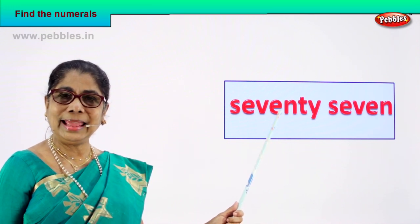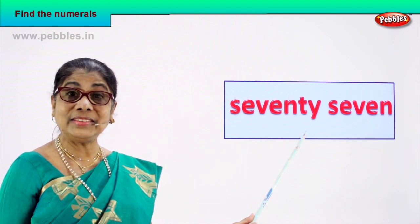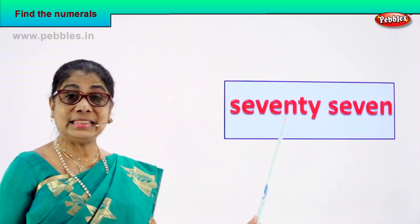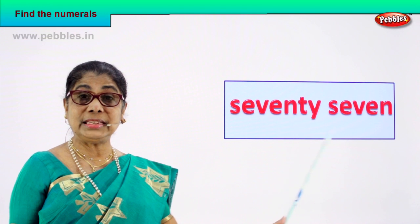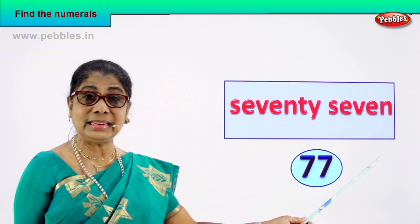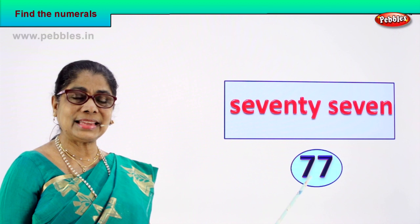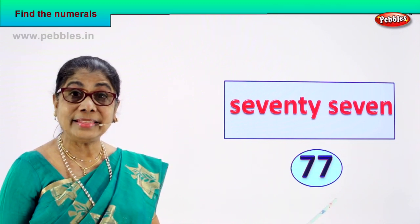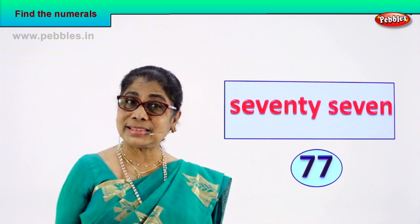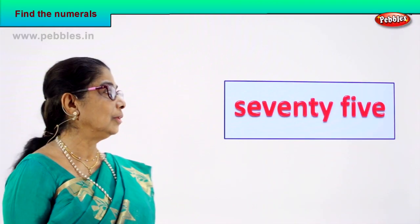S-E-V-E-N-T-Y, 70. S-E-V-E-N, 7. Seventy-seven, 77. How do we write the numeral? Seven and seven — 77. That's the numeral for this number name. Very good, did you enjoy the exercise?